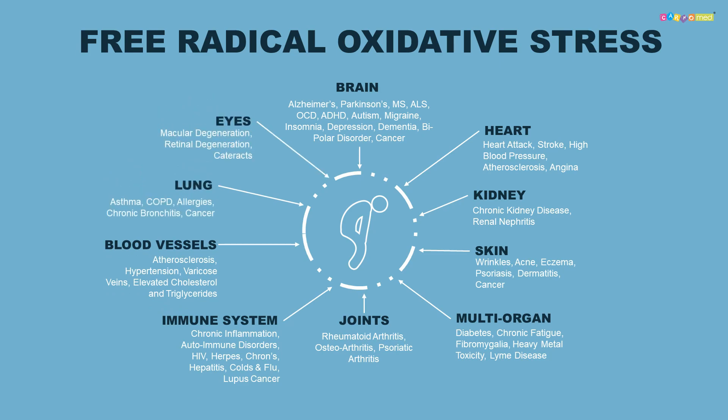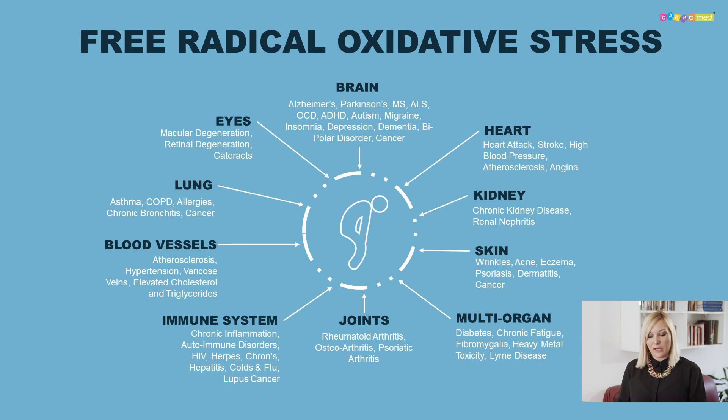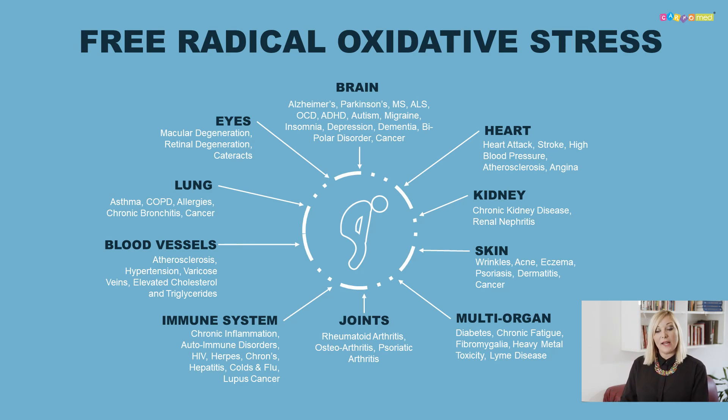Oxidative stress affects our brain — in Alzheimer's disease, Parkinson's disease, multiple sclerosis, ALS, and autism. It is also found in stroke, high blood pressure, and atherosclerosis. Oxidative stress affects our kidneys, skin, joints, and immune system. It is responsible for chronic inflammation, autoimmune disorders, damaged blood vessels, lung diseases, and eye diseases.